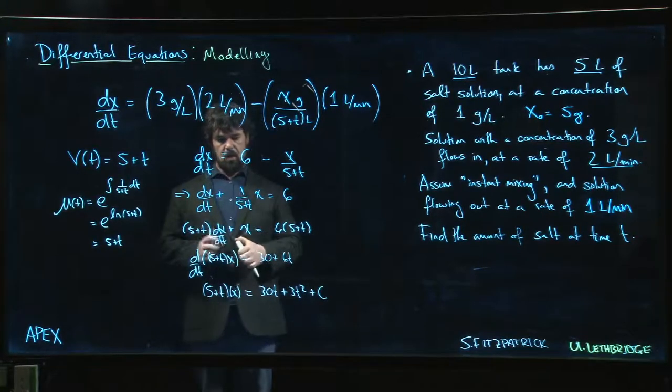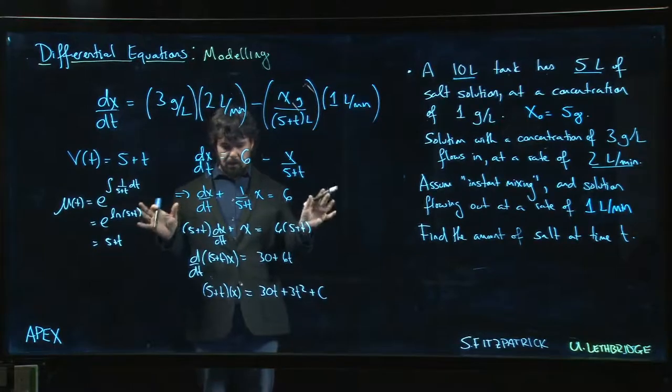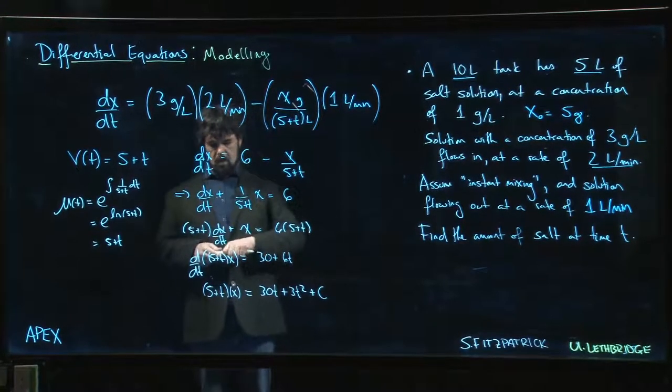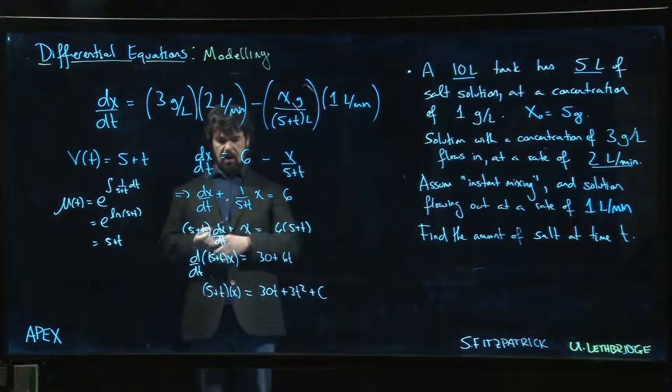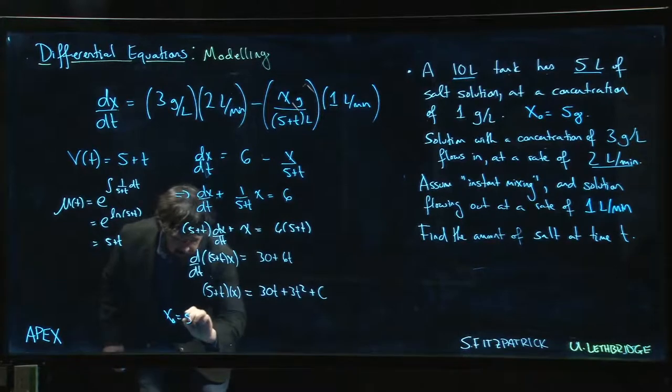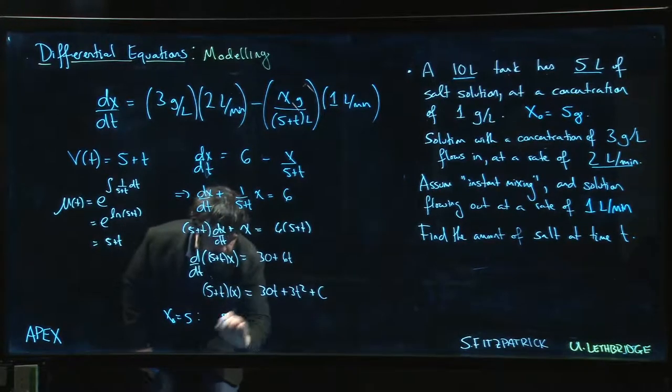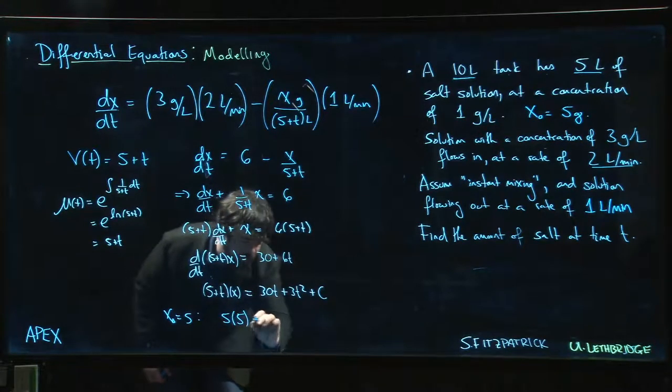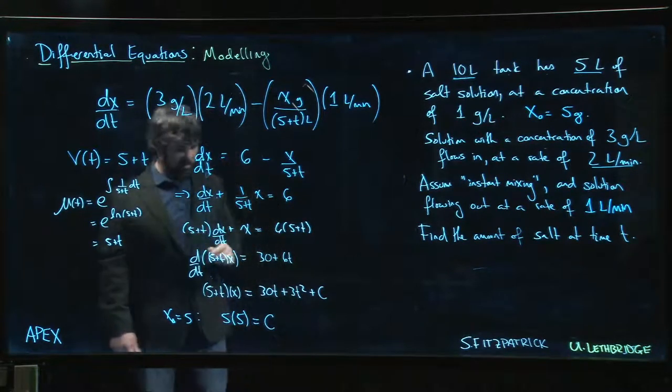We can determine that constant. This is maybe a convenient time to do it. We know that x(0) is still 5, so x naught equals 5 tells me that 5 times x(0), so 5 times 5, should be equal to C because t goes to zero. So that's 25.